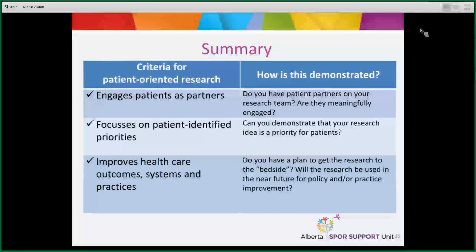To summarize: if you want to determine whether research is patient-oriented, look for three criteria. First, does it engage patients as partners? Does the researcher have patient partners on the team, and are they meaningfully engaged? Second, does it focus on patient-identified priorities? Can the researcher demonstrate that the research idea is a priority for patients — have they actually gone out and asked? Third, does it improve healthcare outcomes, systems, and practices? The best way to know is whether there is a plan to get the research to the bedside and used for policy and practice improvement — not 17 years down the road.